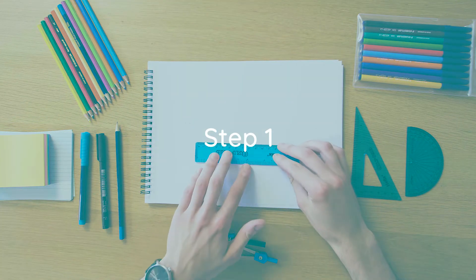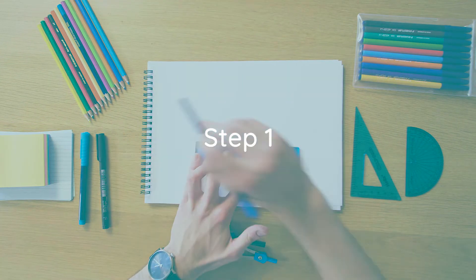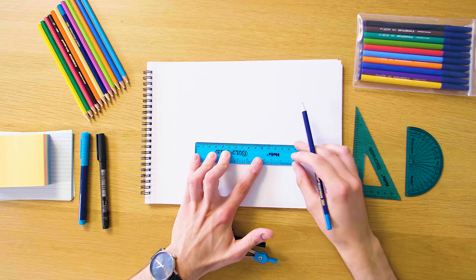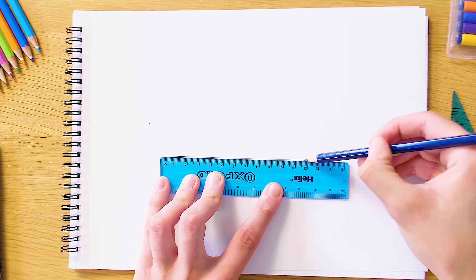So our first step is just gonna be to pick a length and draw a line of that length. In this case I'm just gonna pick 12 centimeters and we're gonna draw it straight across like this.